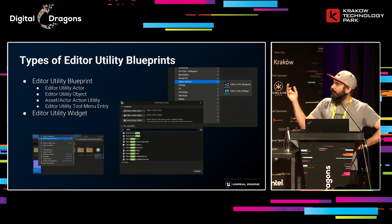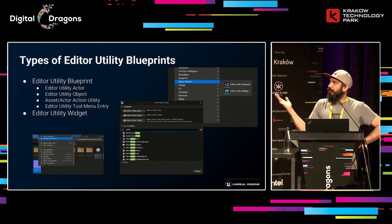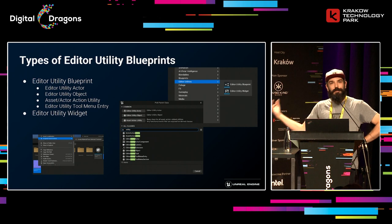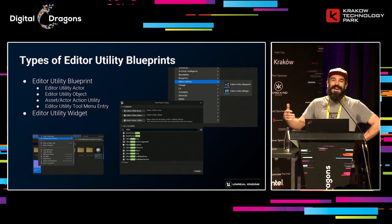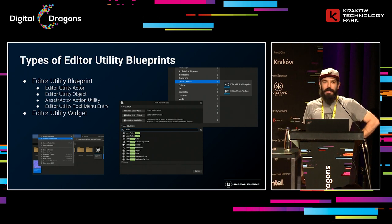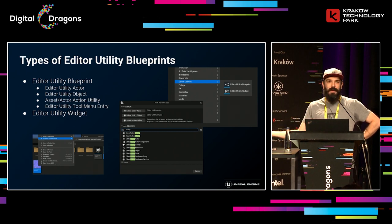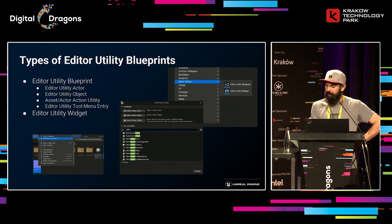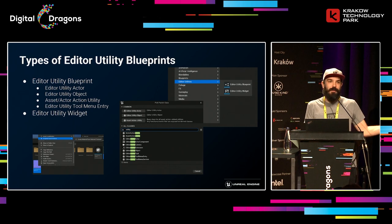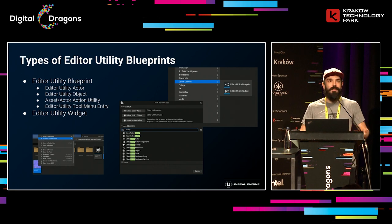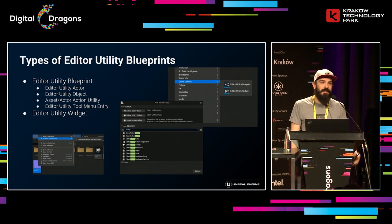First of all, Editor Utility Actor and Object are just an actor and object. The main difference is that they allow you to access editor functionalities from within themselves, inside the blueprints. You can place the actor on the scene and do some stuff, or use the object as one part of your system.